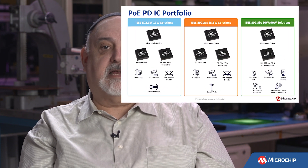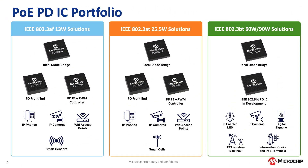A PoE powered device is an IC that you put into any device that you want powered by power over Ethernet. Data and power will come across that Ethernet cable, and the powered device IC will take the power off that cable and put it into a step-down transformer, which will then regulate the exact amount of power that is needed for the device.